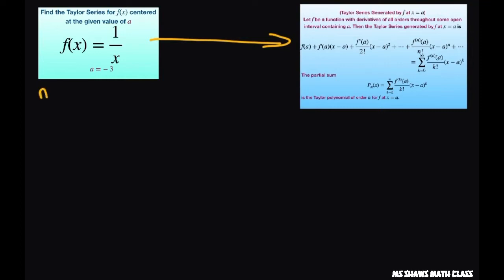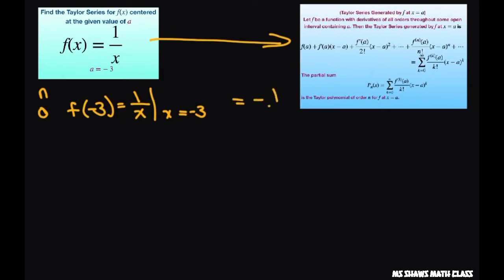Starting with the original, just f of x. We write f of negative 3 equals 1 divided by x, and we're evaluating this at x equals negative 3. When you substitute that in, we're going to get this equals negative 1 third.